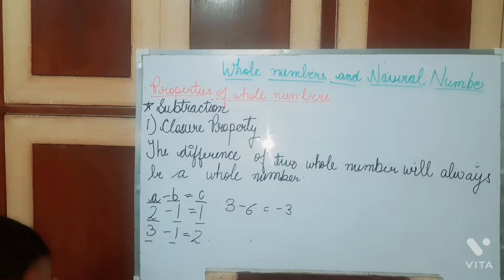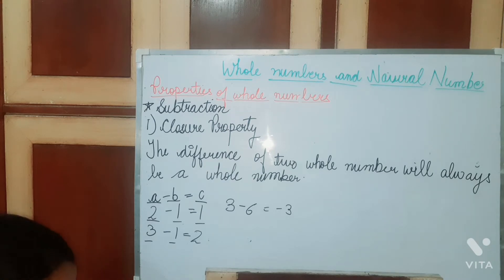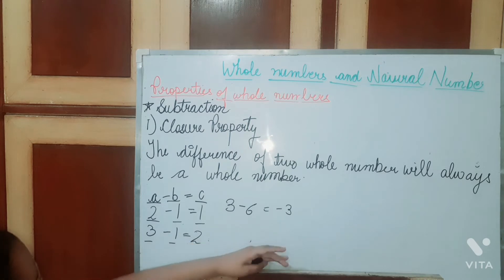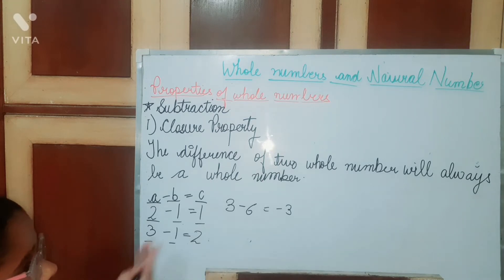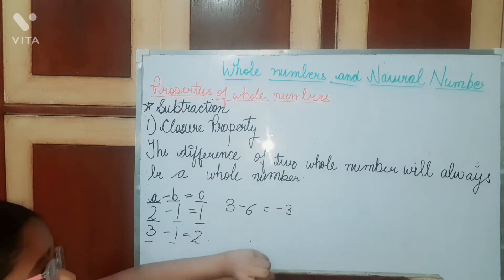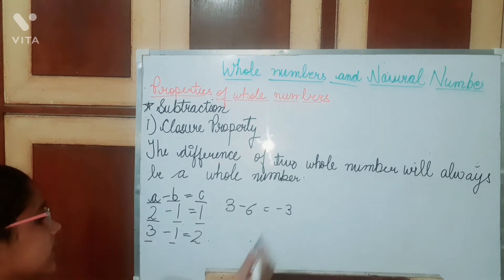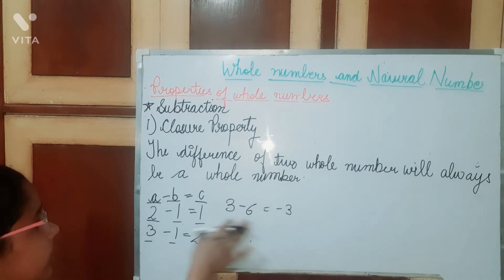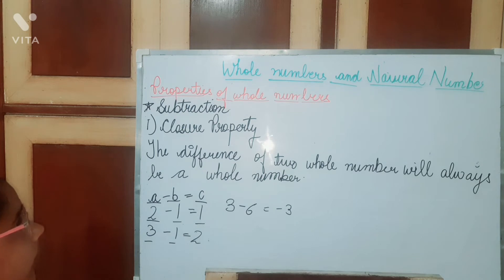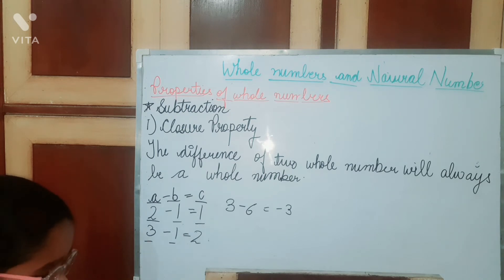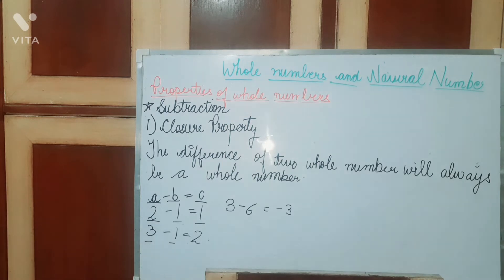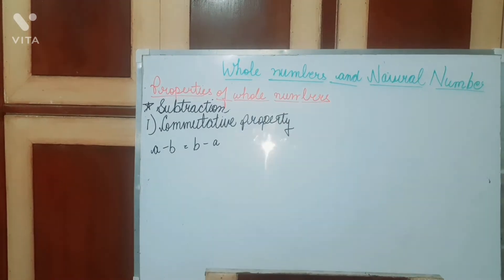So the question is: does this property hold for subtraction? No, it doesn't hold for subtraction, because when we subtract these whole numbers we are getting minus three as the answer, and minus three is not a whole number because it is less than zero. So closure property does not hold for subtraction.